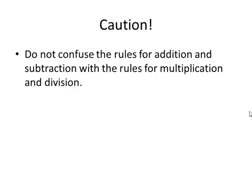One important note: be careful not to confuse the rules for addition and subtraction with the rules for multiplication and division. If you're multiplying two negative numbers, the result is positive. But if you're adding two negative numbers, the result is negative. So two negatives don't always make a positive — it depends on the operation. When adding 7 plus negative 9, the number with the larger absolute value dictates the sign of the answer. But when multiplying 7 times negative 9, it doesn't matter which has the larger absolute value. Keep these two sets of rules distinct.